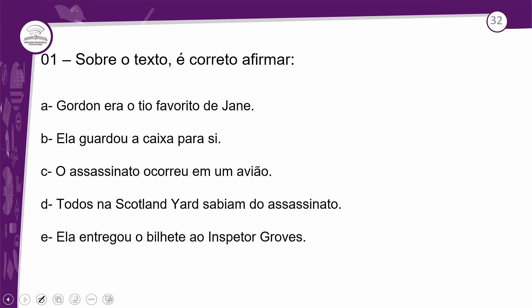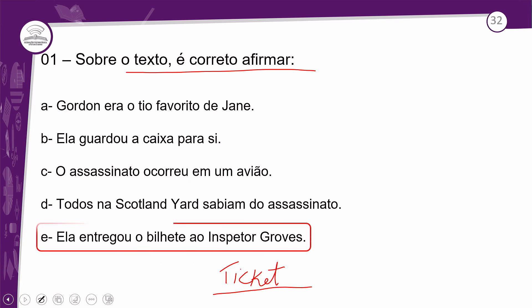According to the reading, everyone should have marked which answer for question number 1 — what is correct to say about the text? Options A, B, C, D, or E. Pay attention — she gave the ticket to Inspector Groves, and we saw that she found it beside the dead uncle's body. So that ticket — that information is correct. Therefore the answer is letter E, our correct answer for question 1.